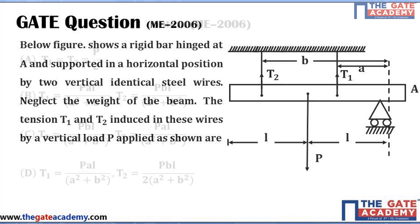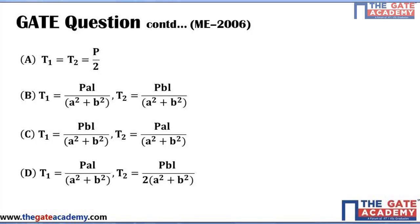Option A: T1 = T2 = P/2. Option B: T1 = P·a·L/(a² + b²), T2 = P·b·L/(a² + b²). Option C: T1 = P·b·L/(a² + b²), T2 = P·a·L/(a² + b²). Option D: T1 = P·a·L/(a² + b²), T2 = P·b·L / [2(a² + b²)].